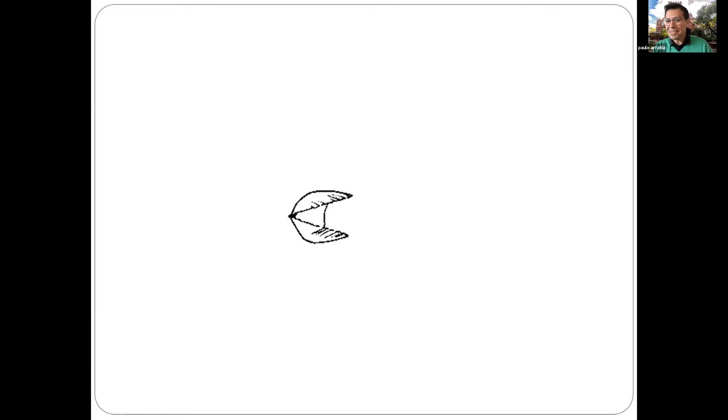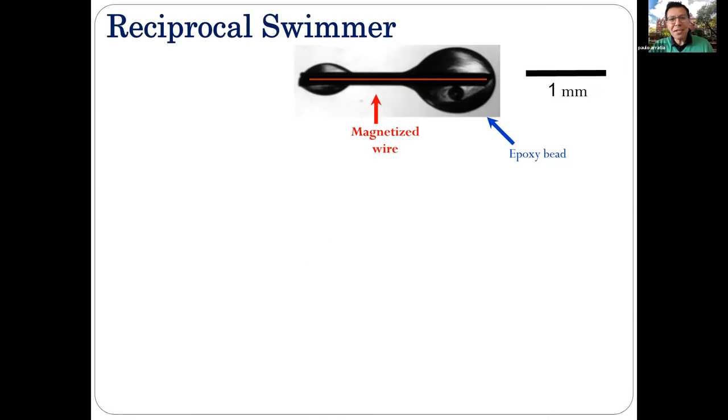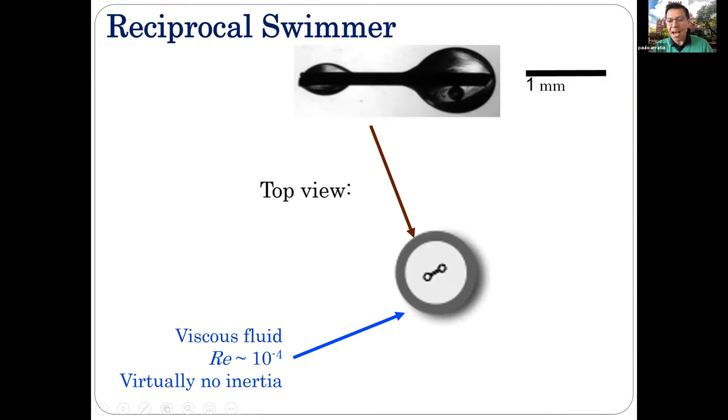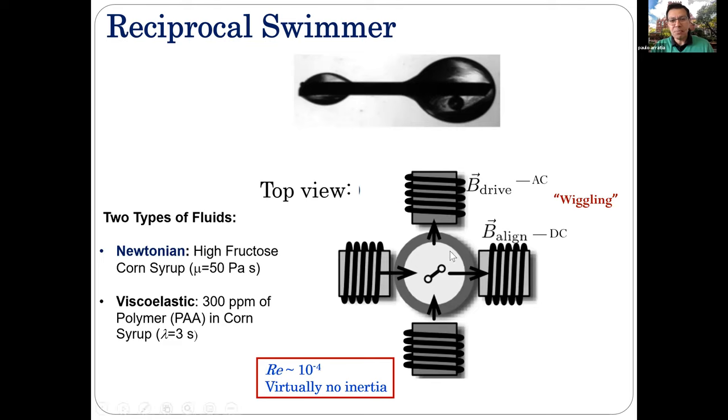This is your Scallop. I'm putting polymers around and saying, hey Scallop, can you move now? It's the dumbest experiment you've ever heard of, but it has consequences to this. So this is our swimmer. It's just a rod, magnetic rod with two beads, one large, one small. We're going to take this bead and put it in a bath of very viscous fluid. Inertia is gone, so the Reynolds number is 10 to the minus four. This is the Reynolds number of E. coli swimming. Then we're going to add some coils, magnetic coils. This one aligns the rod and this one is actuated in a sinusoidal way. Two types of fluids, Newtonian, high fructose corn syrup, and then we add a little bit of polymer to this high fructose corn syrup. But again, no inertia.